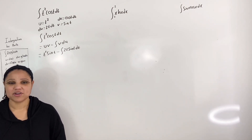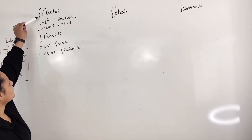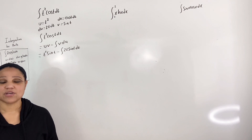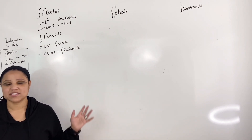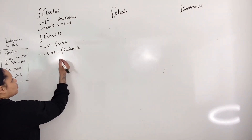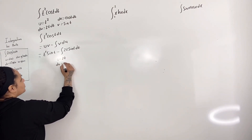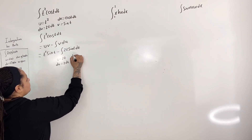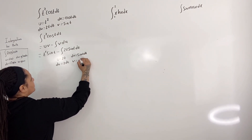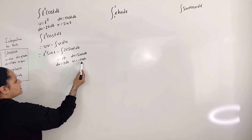Now we need to apply integration by parts again. Note that any time you have an integral without lower and upper limits, you must always include plus c in your final answer — I will include it at the very end. Applying integration by parts again, I let u equal 2t, so du equals 2dt. And if I let dv equal sine of t dt, then v equals negative cosine of t, because the antiderivative of sine of t is negative cosine of t.